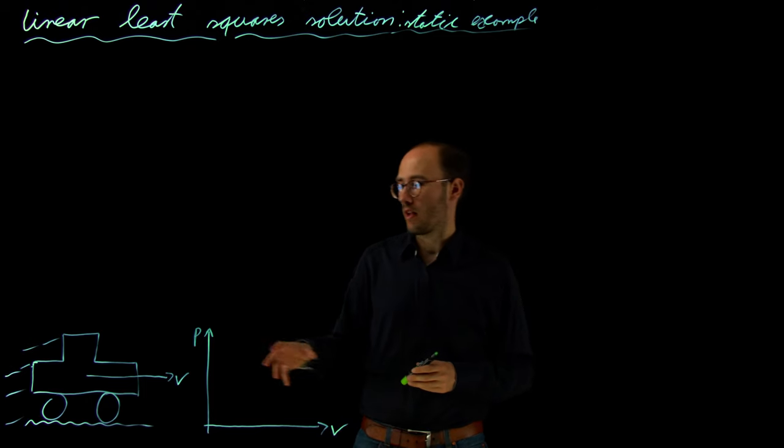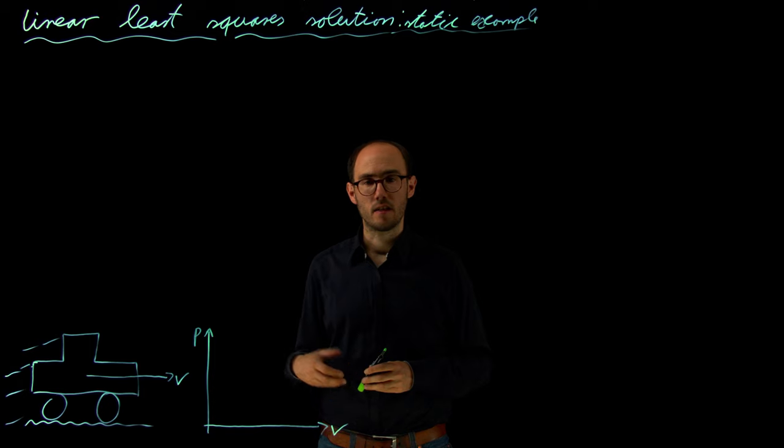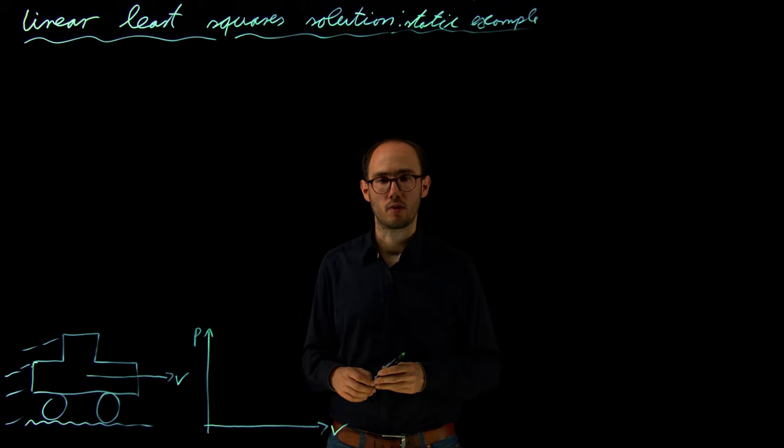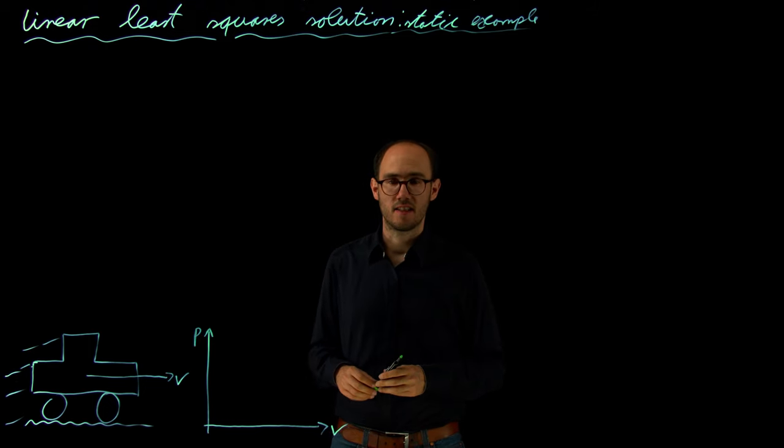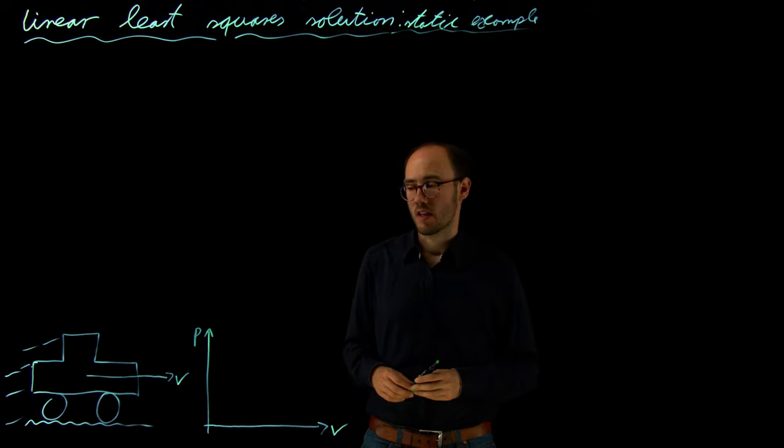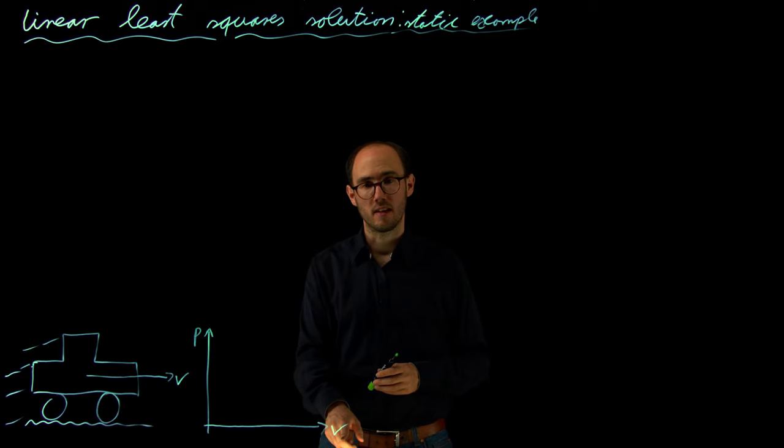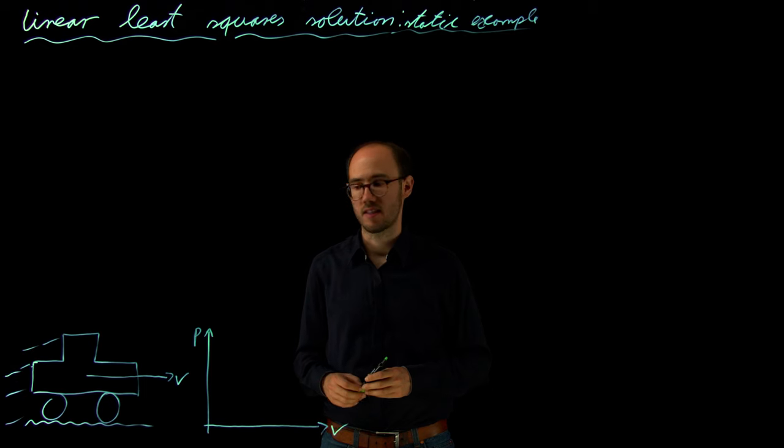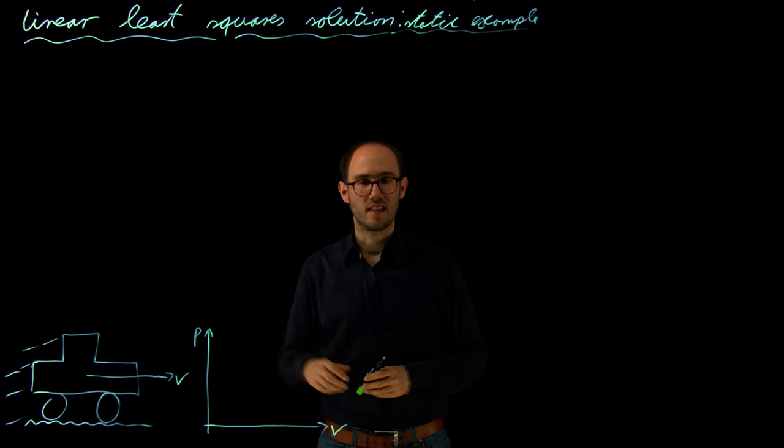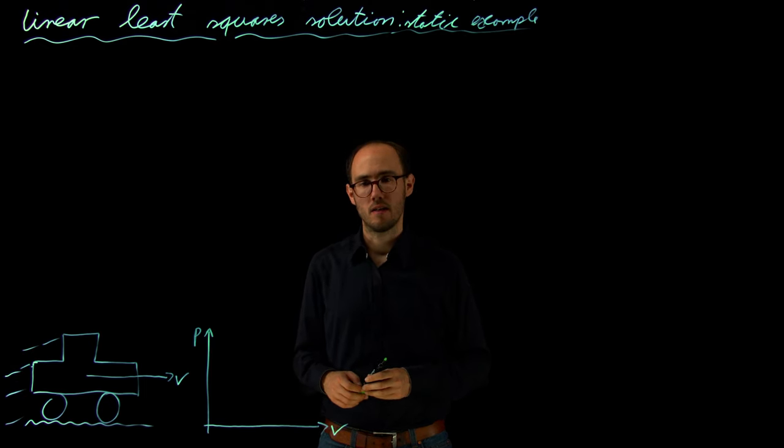In this example I would like to identify the parameters describing the driving behavior of a car, depicted here, in steady state. And in particular I would like to map the velocity v, so the lateral velocity of the car in steady state against the power p, which is required to maintain this speed in an ideal plane.